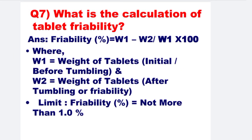Next: What is the calculation of tablet friability? Friability = (W1 − W2) / W1 × 100, where W1 is the weight of tablets before tumbling and W2 is the weight of tablets after tumbling or friability test. The friability limit is not more than 1%.